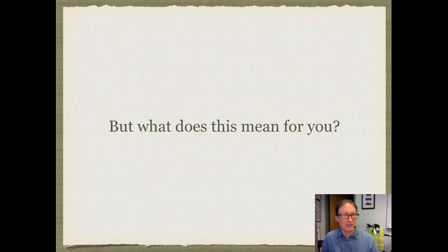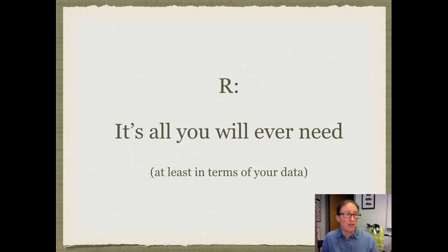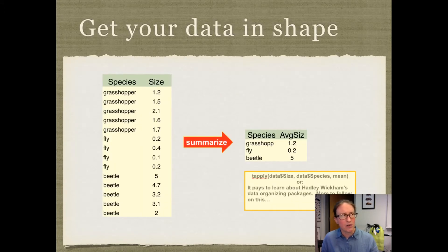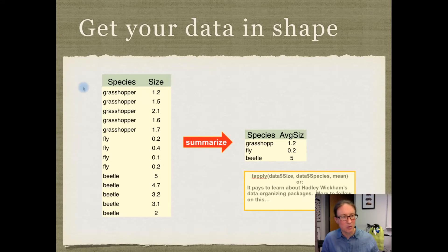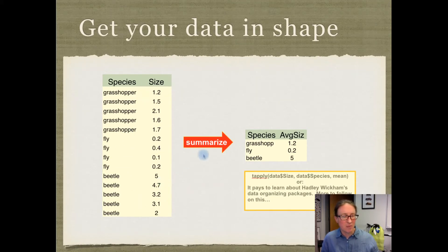What does it actually mean for us? The nice thing about R is that it can be all that you will ever need in terms of analyzing your data. Here's some example data — just measuring sizes of different insect species. We've got a bunch of grasshoppers, flies, and beetles, and then their sizes. There's a function called the summarize function that will let us summarize and automatically calculate the average size for each of those groups.